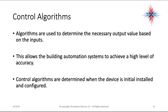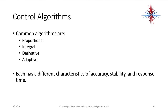Control algorithms are used to determine the necessary output value based on inputs. A control algorithm is a set of calculations that allows the building automation system to achieve a high level of accuracy. Control algorithms are determined when the device is initially installed and configured. Common algorithms are proportional, integral, derivative, and adaptive — each with different characteristics of accuracy, stability, and response time. These can be grouped together to increase accuracy and stability.